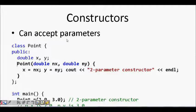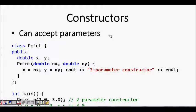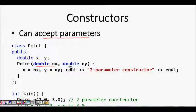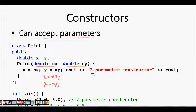Since the constructor is a special function, someone might ask: can it take parameters or arguments? The answer is yes — a constructor can accept parameters. For example, for a Point with x and y, you can pass 'double nx' and 'double ny' as arguments, then set x equal to nx and y equal to ny. This gives us a two-parameter constructor.